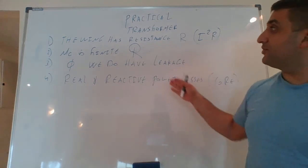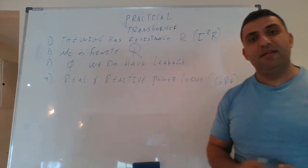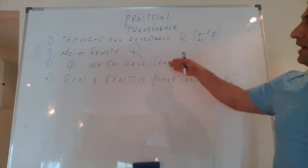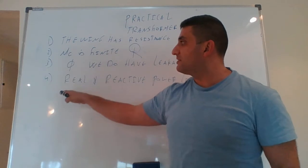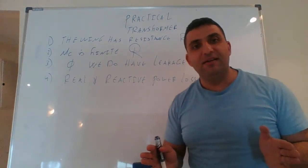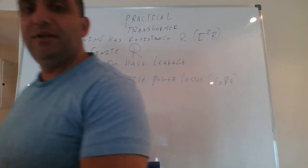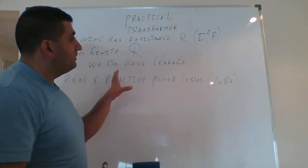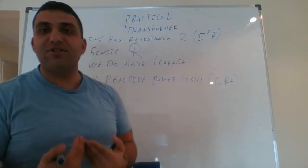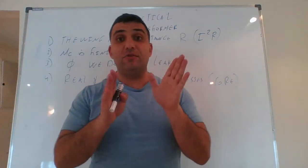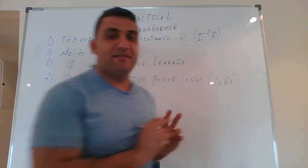These four elements — resistance, permeability mu, flux, and core losses — determine the boundary of a practical transformer, just as the same four elements determine the boundary of an ideal transformer. As an electrical engineer, I need to represent all this information in a circuit. How do I represent this in a circuit? Let's see.